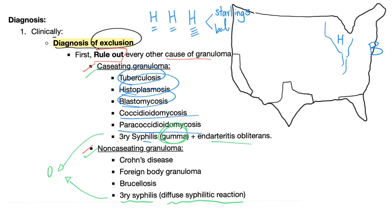Histo hides in the cavities. How about coccidioidomycosis? California and maybe Arizona — please remember earthquakes. How about paracoccidioidomycosis? You'll find this in South America.